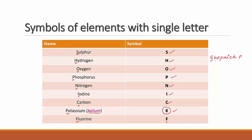Breaking down the mnemonic: S for sulfur, H for hydrogen, O for oxygen, P for phosphorus, N for nitrogen, I for iodine, C for carbon, K for potassium, and F for fluorine.